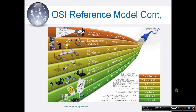Layer 5 is the session layer. This layer establishes, manages, and terminates connections between applications. It sets up, coordinates, and terminates conversations, exchanges, and dialogues between applications at each end. It deals with session and connection coordination, and provides a logically persistent connection between processes — keeping track of when a conversation begins and ends. It might involve user or host authentication, login, or transaction encapsulation for database access.